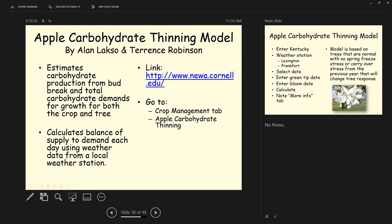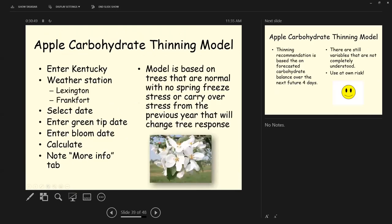And then it calculates the balance of the supply to demand between the fruits each day using the weather data from a local weather station. So to get to this, you go to this Cornell website. And then you go to crop man, the crop management tab and the apple carbohydrate thinning. You enter your state and Kentucky was listed up there, which surprised me. And I was really surprised that there were two weather stations listed, Lexington and Frankfurt. So I'm hoping maybe we can get some more of our Mesonet stations listed around the state. Then you select the current date, enter your date of the green tip, the date that you reached green tip, and then the bloom date, and then you push calculate. There's also a button there for more information.